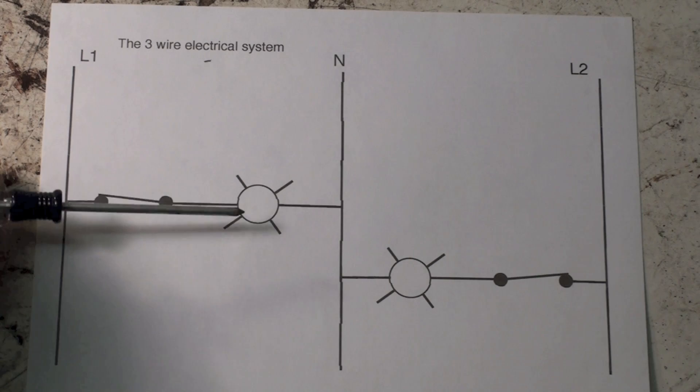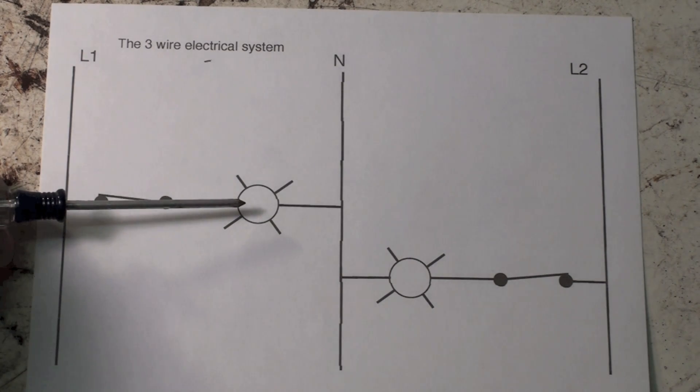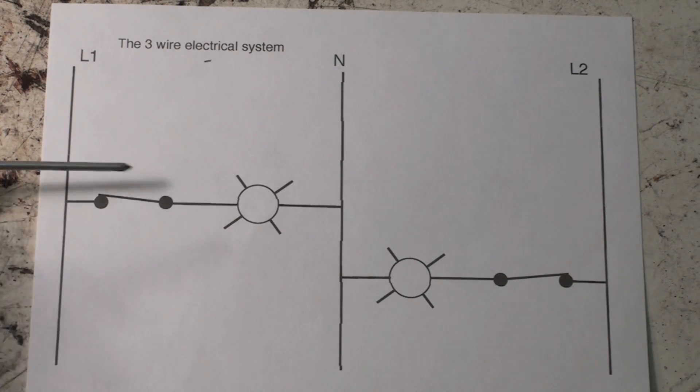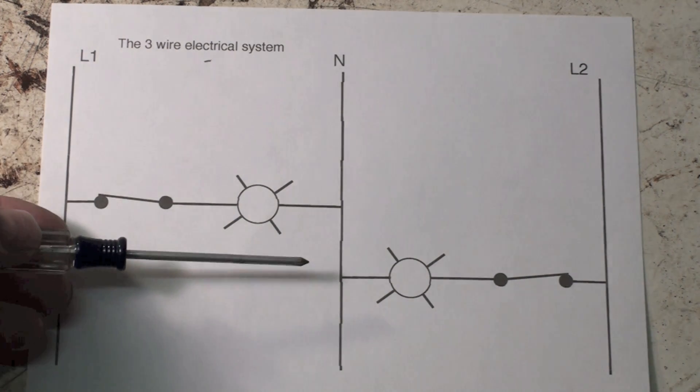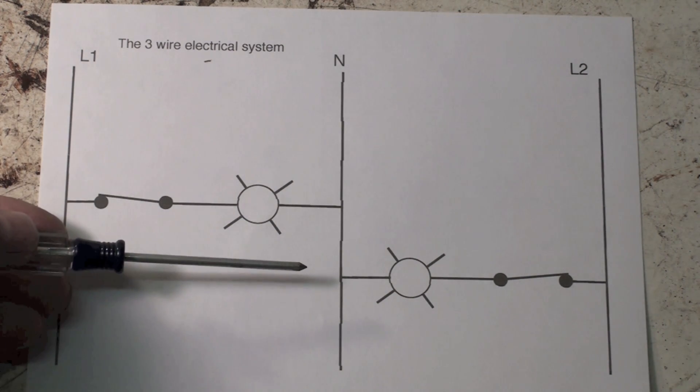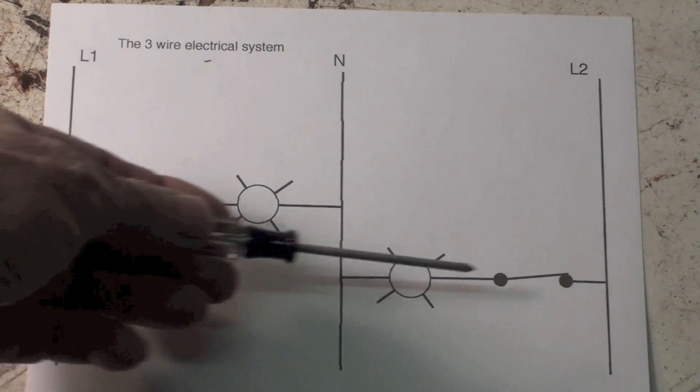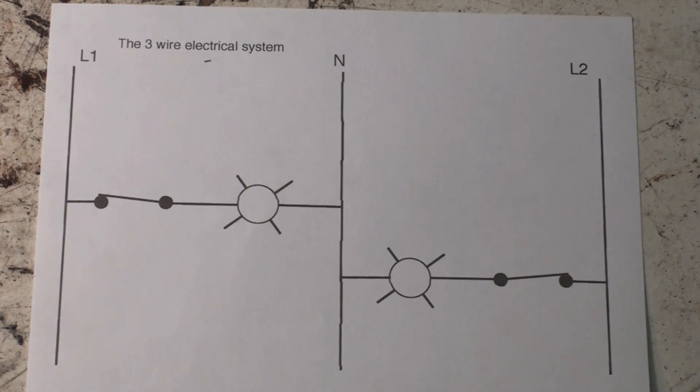The power passes through here, then goes to the neutral. The neutral distributes it to the other side of the line, which also has a light and a normally closed switch. Both of these lights would be burning at 120 volts. This is the simple way this thing works.